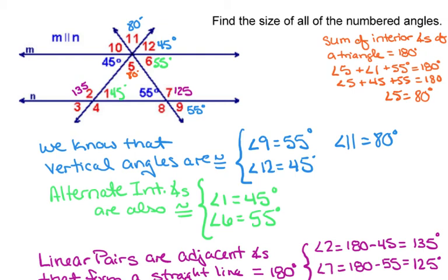And then I know that angle 6 and 10 are vertical angles. So angle 10 is going to equal 55 degrees, the same as angle 6.